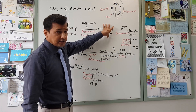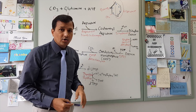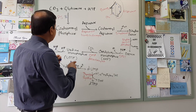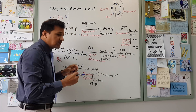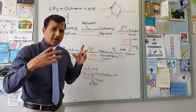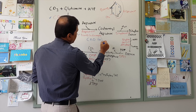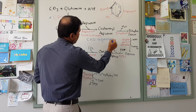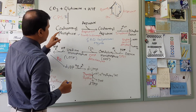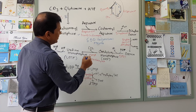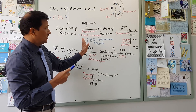Carbamyl aspartate undergoes a reaction catalyzed by dihydroorotase enzyme to give dihydroorotate. The three enzymes so far — carbamyl phosphate synthetase 2, aspartate transcarbamylase, and dihydroorotase — are all present in one large protein complex called the CAD trifunctional enzyme complex: C for carbamyl phosphate synthetase 2, A for aspartate transcarbamylase, and D for dihydroorotase.